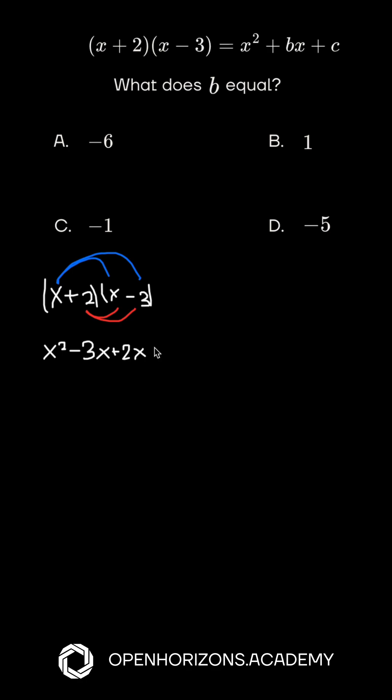These are the like terms we're going to combine. But now we multiply 2 times negative 3, which now leads us with negative 6.